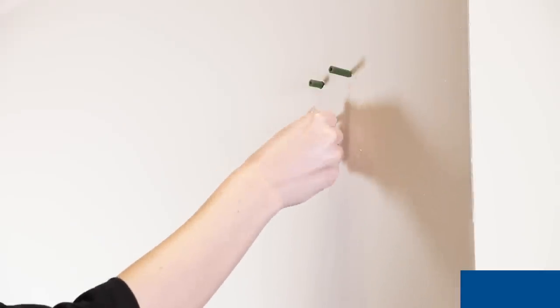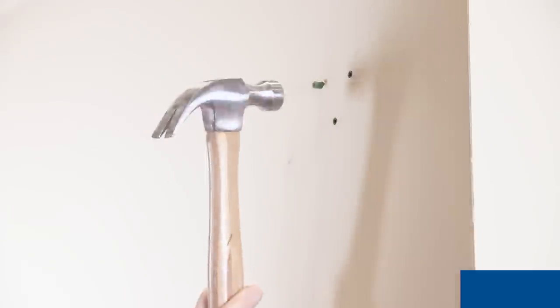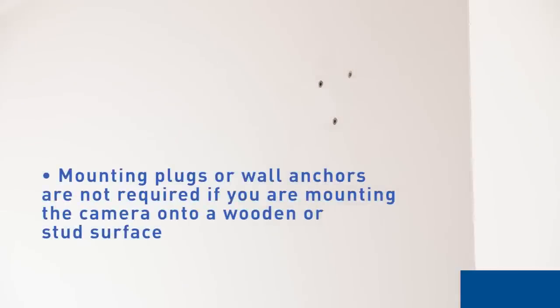Once the holes are drilled, gently tap the mounting plugs or wall anchors into the holes with a hammer until they are flush with the surface. Mounting plugs or wall anchors are not required if you are mounting the camera onto a wooden or stud surface.